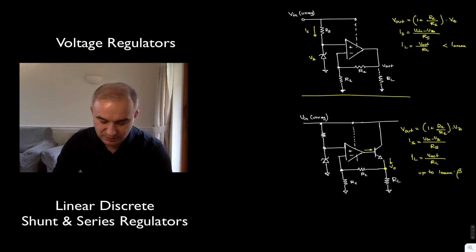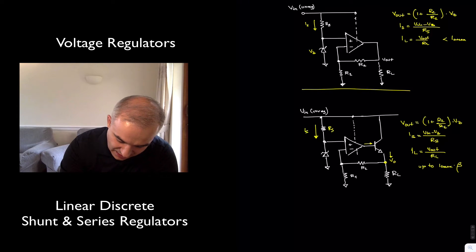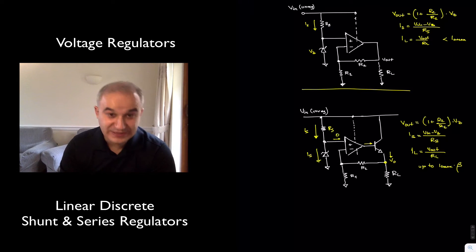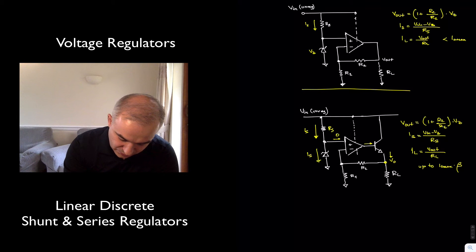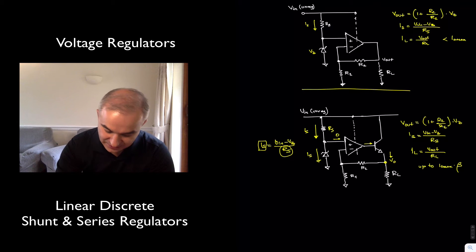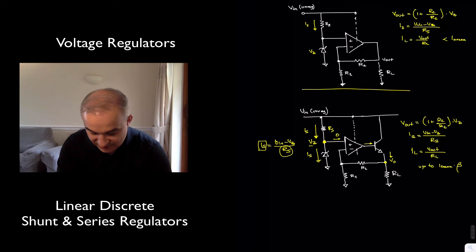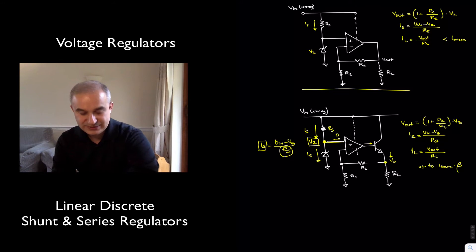I'll go over it quickly here. So, with RS we establish a current that is going to go through the zener diode, IS, because the current into the operational amplifier is zero. And so IS equals V-input minus the zener voltage over the resistance. We choose RS to make sure that IS is valued appropriately, establishing a stiff reference here: V-zener.